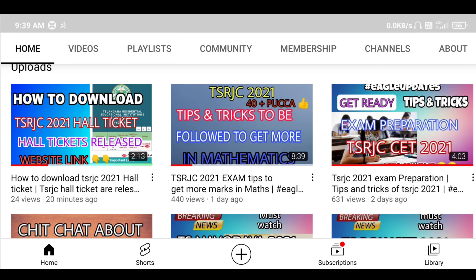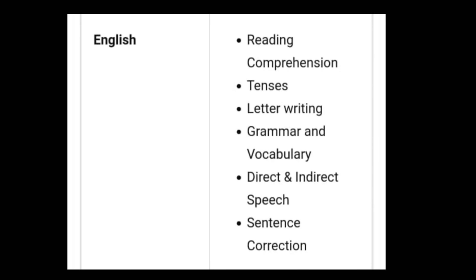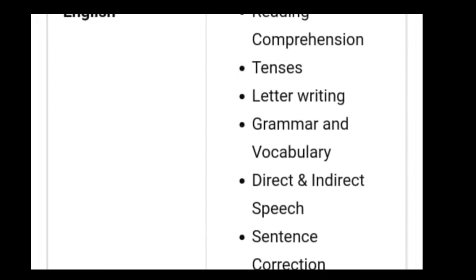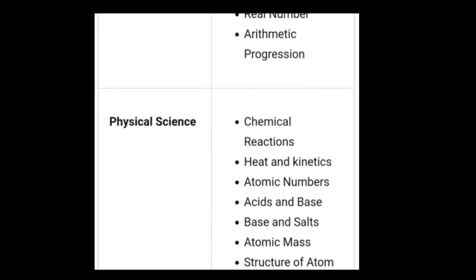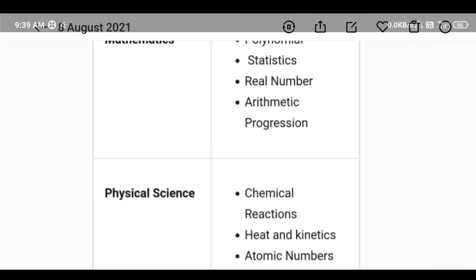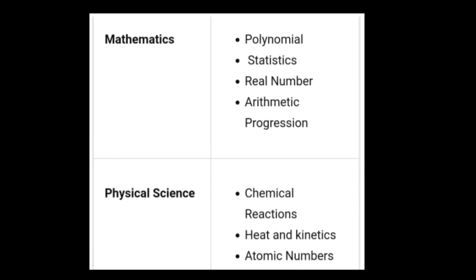You will get a syllabus link in the description. There are 4 subjects: English, Math, Physics, and Biology. English syllabus is covered. Next, Mathematics syllabus: Polynomials, Statistics, Real Numbers, Arithmetic Progressions — 4 main lessons, which are easy lessons. You will get a lot from these lessons.